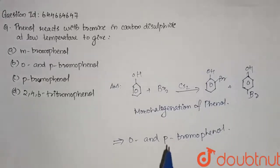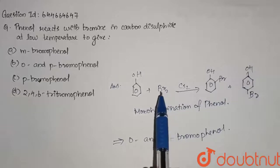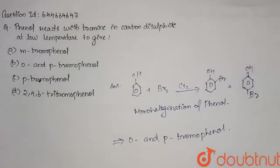So, I hope you got it. So, mono halogenation of phenol. So, CS2 decreases the electrophilic reactivity of Br2. Therefore, it will get attached to only one position of phenol. Okay? Hope you got it. Thank you.